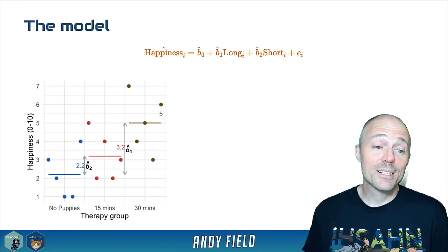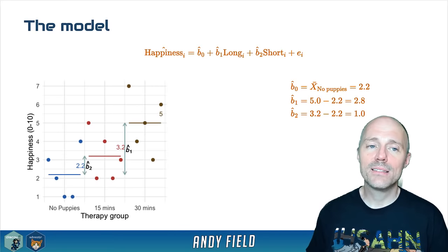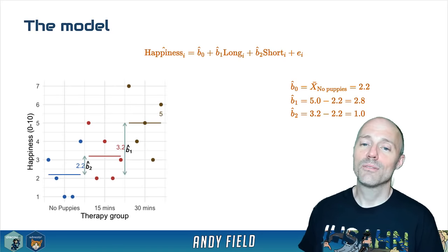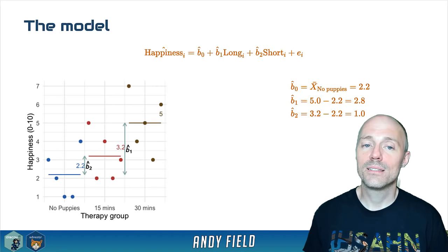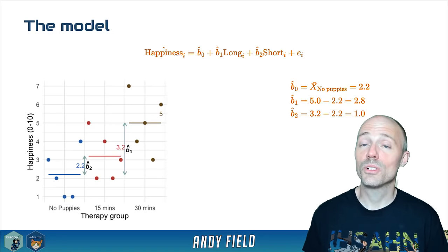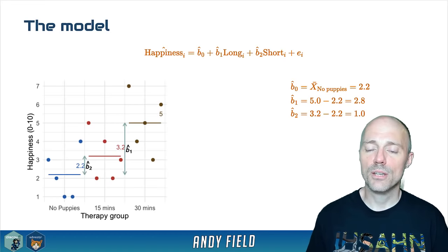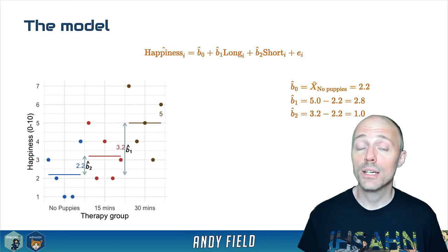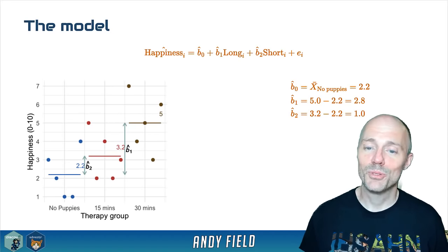To state this explicitly: the intercept beta-zero is 2.2 — the no-puppy group mean. The beta for the 'long' dummy variable is 5 minus 2.2, which equals 2.8 — the difference between the 30-minute and control group means. The beta for the 'short' dummy variable is 3.2 minus 2.2, which equals 1 — the difference between the 15-minute and no-puppy group means.